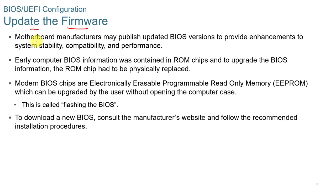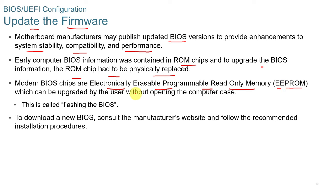Motherboard manufacturers may publish updated BIOS versions to provide enhancements to system stability, compatibility, and performance. Early BIOS was contained in a ROM chip that had to be physically replaced to upgrade. Now you download the BIOS or UEFI firmware update, put it on a USB drive, boot into BIOS, select BIOS update, and it reads the file from the USB drive and updates the software. Modern BIOS chips are electronically erasable programmable read-only memory, or EEPROM. Upgrading without opening the case is called flashing the BIOS.